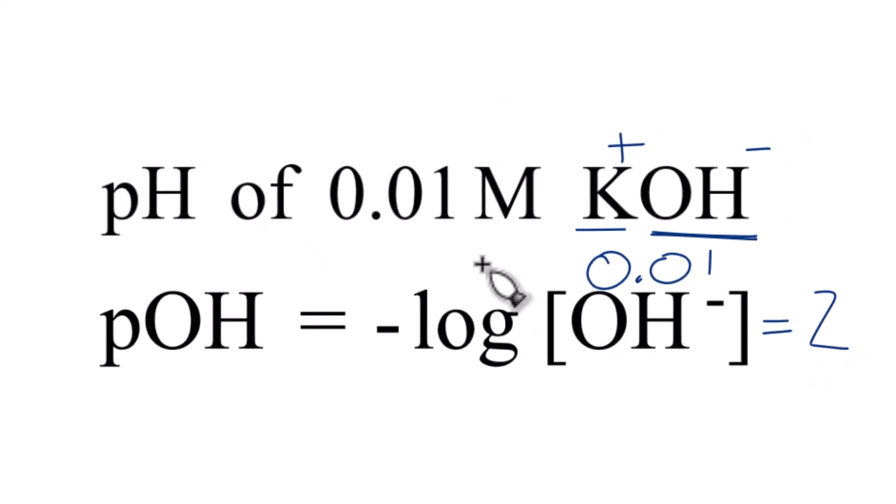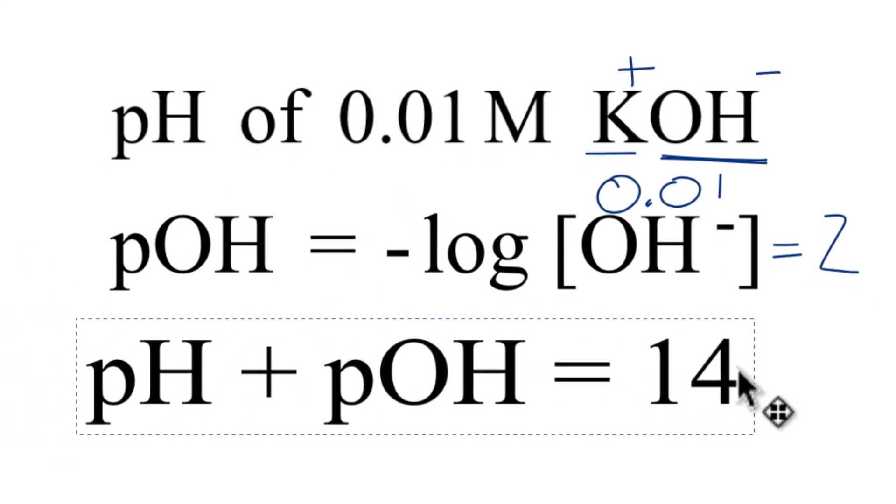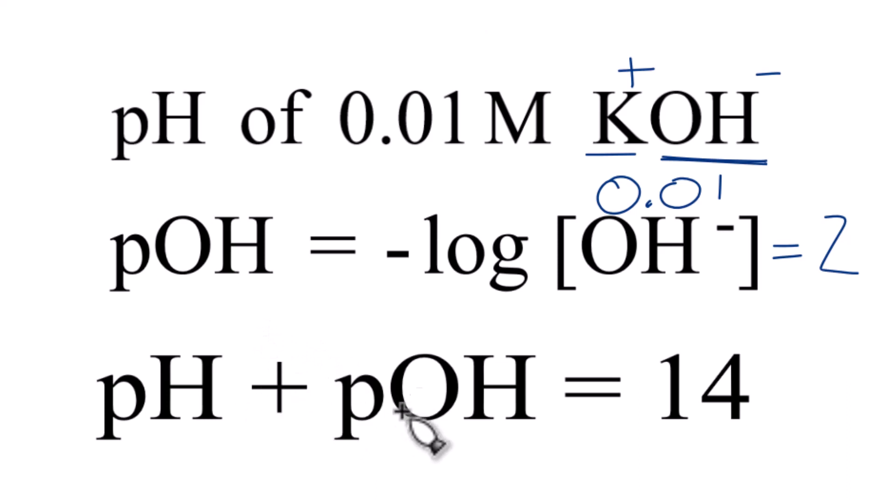Now we can find the pH of our 0.1 molar solution of KOH. And we'll use this equation right here. So pH plus pOH equals 14. We don't know the pH, that's what we're trying to find. But we do know the pOH is 2.